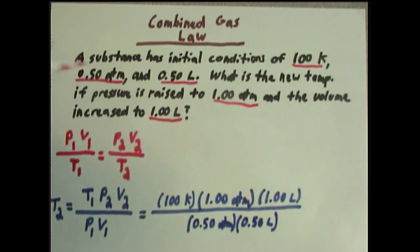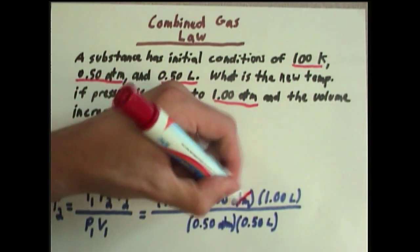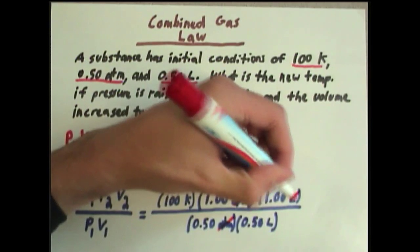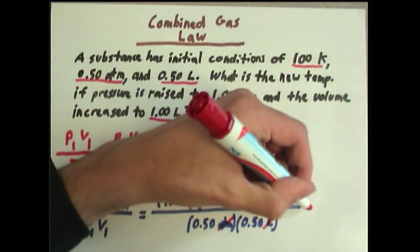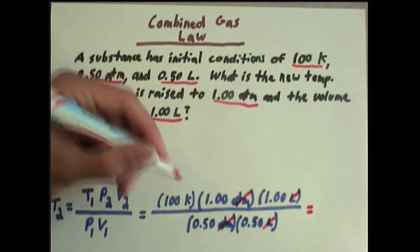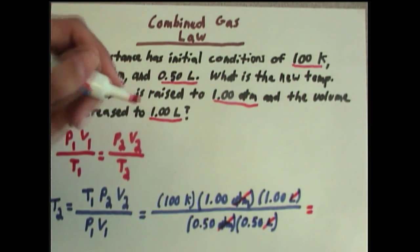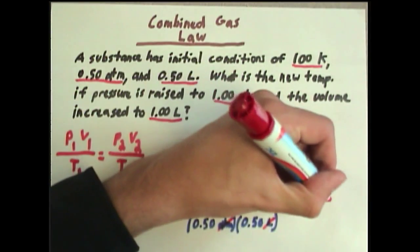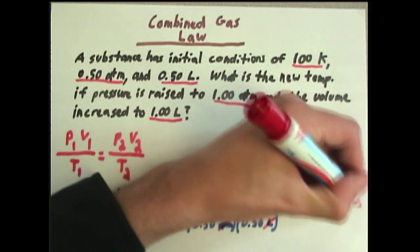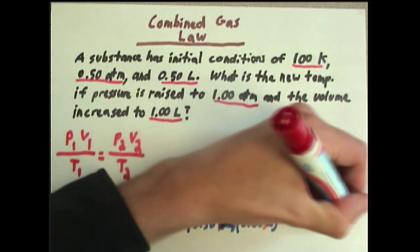And you will notice that our units cancel out. We get rid of atmospheres, and we get rid of liters, to leave us with kelvins, our temperature, which is what we want for our answer. Doing the calculation will give us an answer of 400 kelvins.